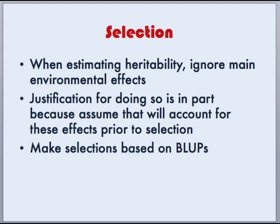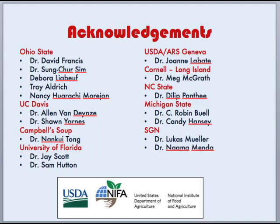When we estimated our heritability, we ignored our main environmental effects. The justification for doing so is in part because it's assumed that we will take these into account prior to making selections. We can do this by making our selections based on BLUPs. I'd like to acknowledge the following groups and individuals for their contributions to this work.